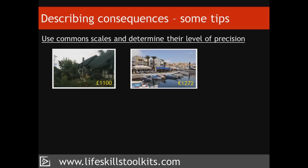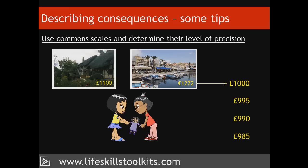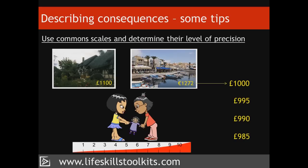Third: use common scales and determine their level of precision. To compare consequences, use similar scales for objective consequences and a qualitative scale for subjective ones. While working out holiday costs, the Petersens convert all euro prices into pounds, and agree to calculate meals, activities, and other costs using multiples of £5. For their subjective consequence of children having fun, they use a scale of 1 to 10 to rate the level of fun they anticipate the children will have.